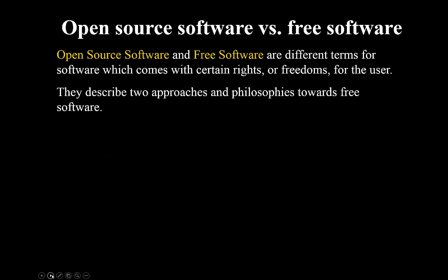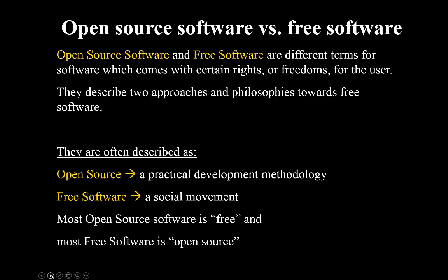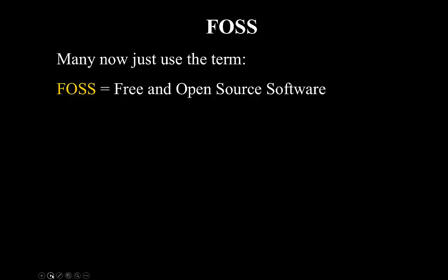They describe two approaches and philosophies towards free software. People will often say that the open source license is a practical development methodology, whereas the free software license is a social movement. In the end, most open source software is free and most free software is open source. Which brings us to the term FOSS — free and open source software.